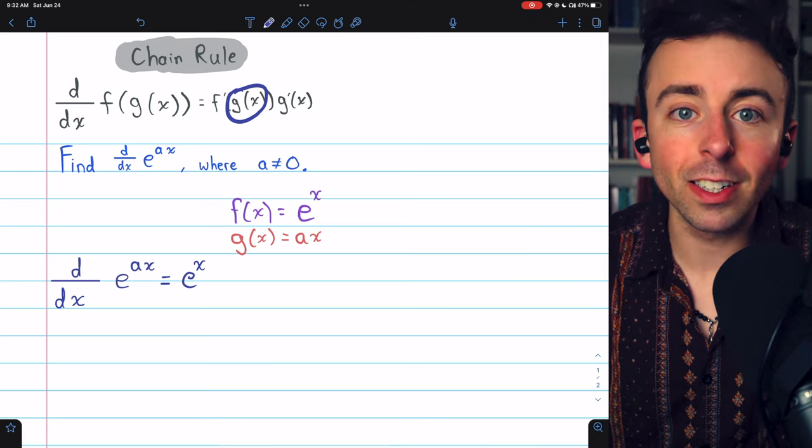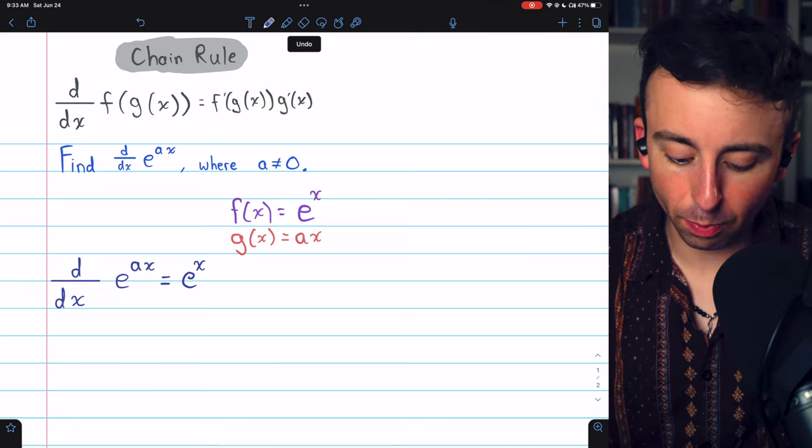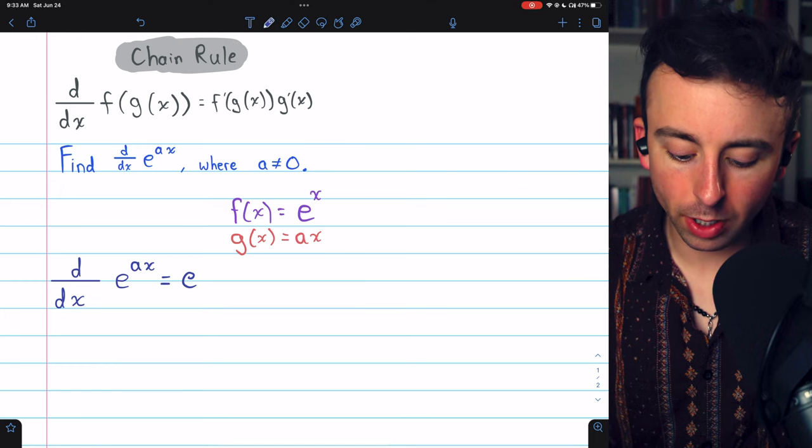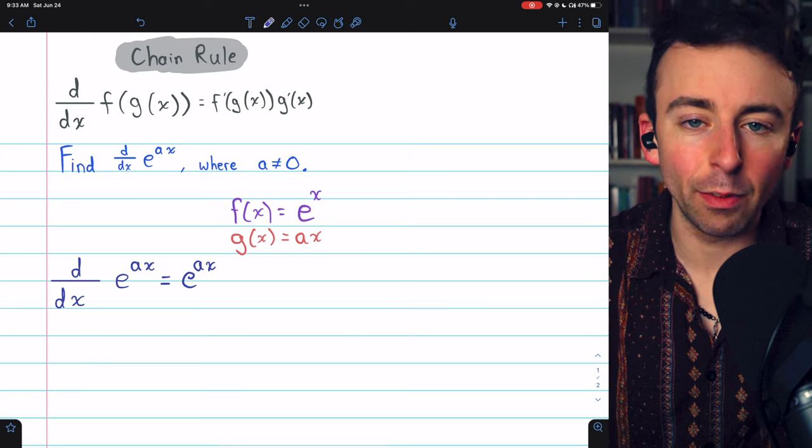we don't want the inside part to be x. We want it to be g of x. So instead of just putting x up here, we're going to put g of x, which is a times x. That's the inside function.